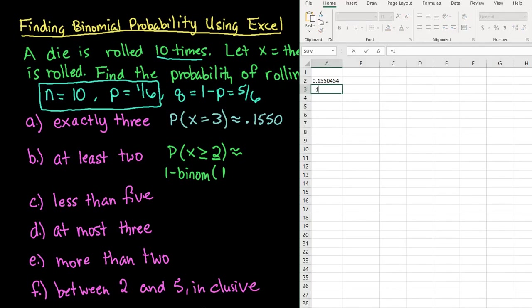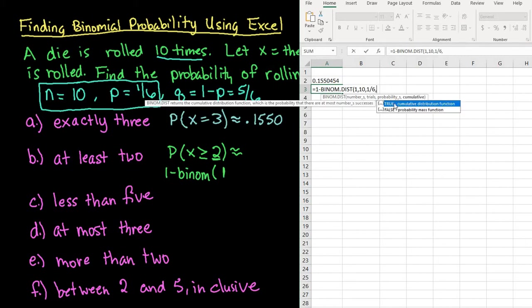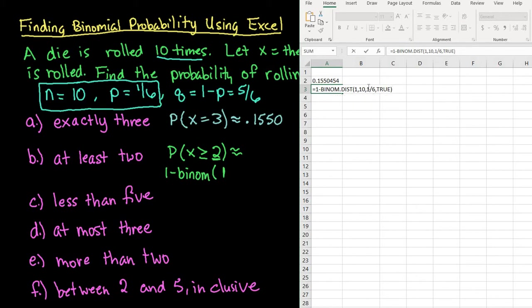So if I use the same formula that I just did, I would type in equals 1 minus binom.distribution. The number s is where is my last excluded value. I want 2 included in the answer, so I have to go 1 less than that. 1 is the last thing that I do not want included. And then I would just do 10. My probability, again, is 1 sixth. This time, I want it to be true for the cumulative. And the reason I'm doing 1 minus is because I want everything above 1 in my answer. So I get 0.5155.